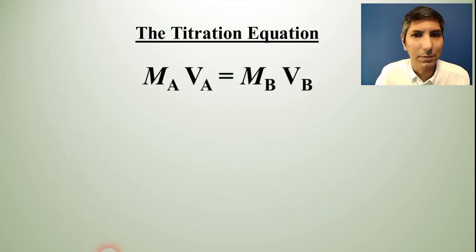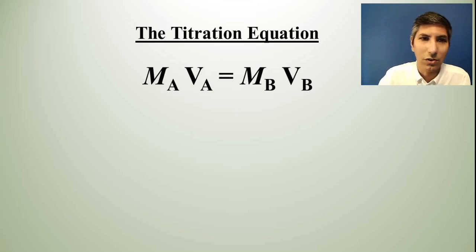We're going to work a few problems with titrations today. But the first problem that we're going to work with, the first series of problems, has to do with what I call the titration equation. MAVA equals MBVB. And this is how we can calculate the amount of volume of acid or a base we're going to need in order to get to the equivalence point.